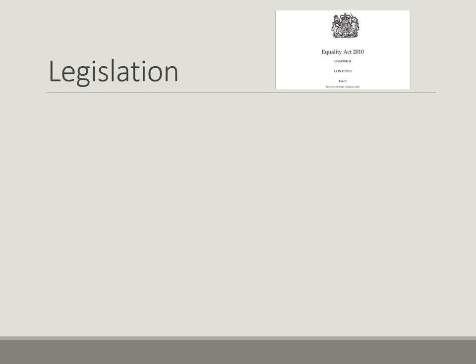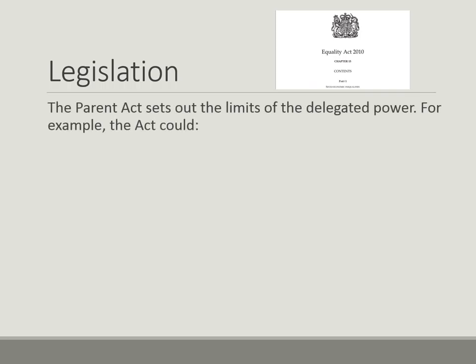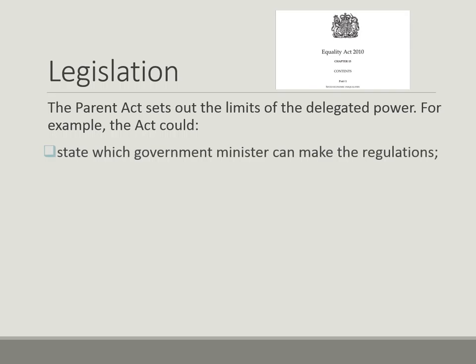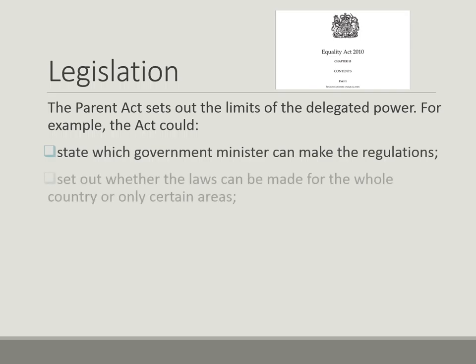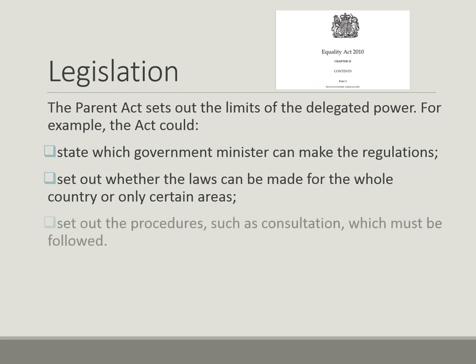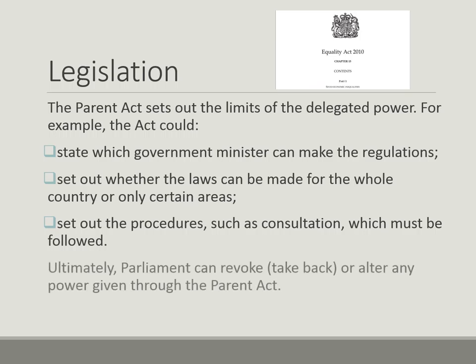The first and most important way of Parliament controlling delegated legislation is through the Parent Act. If there is no Parent Act then there is no delegated legislation, and the delegated legislation can only be about what Parliament says. The Act could state which Government Minister can make the regulations, set out whether the laws can be made for the whole country or only certain areas, and set out the procedures such as consultation which must be followed. Ultimately, Parliament can use an Act of Parliament to take back any power given through the Parent Act, so they have the ultimate control.